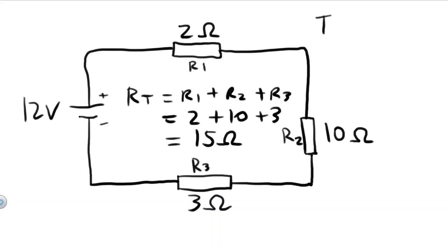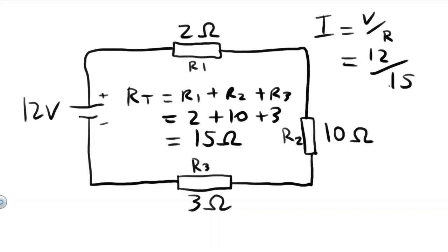So the total resistance for this circuit is 15 ohms. In order to calculate the total current for this circuit, we can just use Ohm's Law. So I will equal V over R. The voltage is 12, the total resistance is 15, so the total current will equal 0.8 amps.